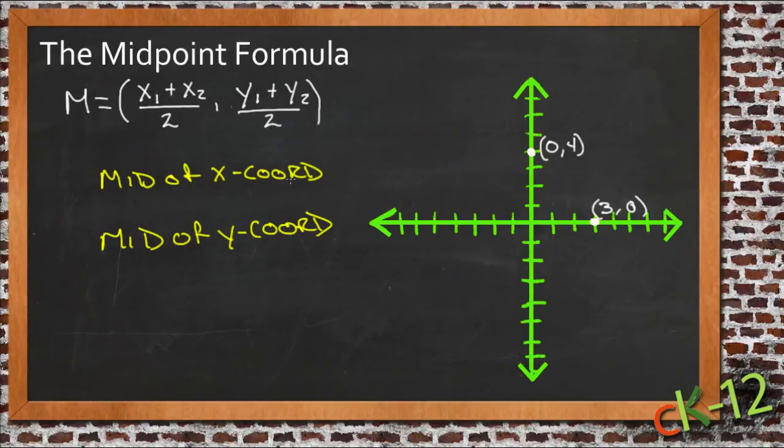To find the middle of the x coordinates, we just take the two x coordinates. For our purposes over here, we have a 0 and a 3. So this line has one point whose x position is at 0 and the other point whose x position is at 3, and what we want to do is find the middle of those two positions.